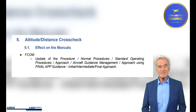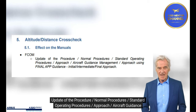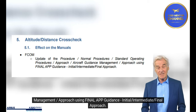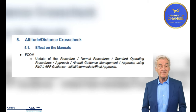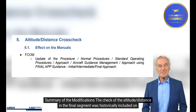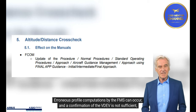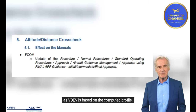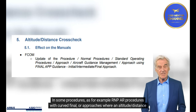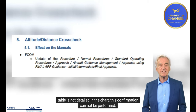Altitude Distance Cross-Check. Effect on the Manuals FCOM. Update of the Procedure: Normal Procedures, SOP, Approach, Aircraft Guidance Management, Approach Using Final App Guidance, Initial, Intermediate, and Final Approach. Summary of the Modifications: The check of the altitude distance in the final segment was historically included on approaches flown with Final App to confirm that the vertical profile and guidance are in accordance with the chart. Erroneous profile computations by the FMS can occur, and a confirmation of the VDEV is not sufficient as VDEV is based on the computed profile. In some procedures, such as RNP procedures with curved final or approaches where an altitude distance table is not detailed in the chart, this confirmation cannot be performed.